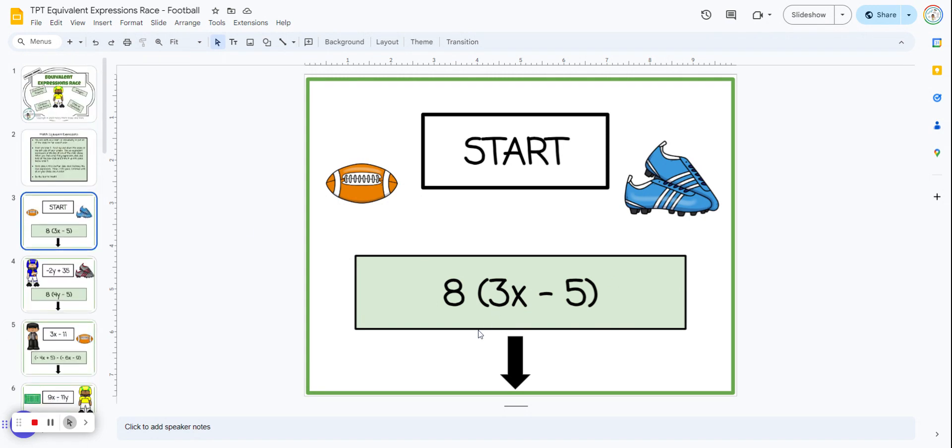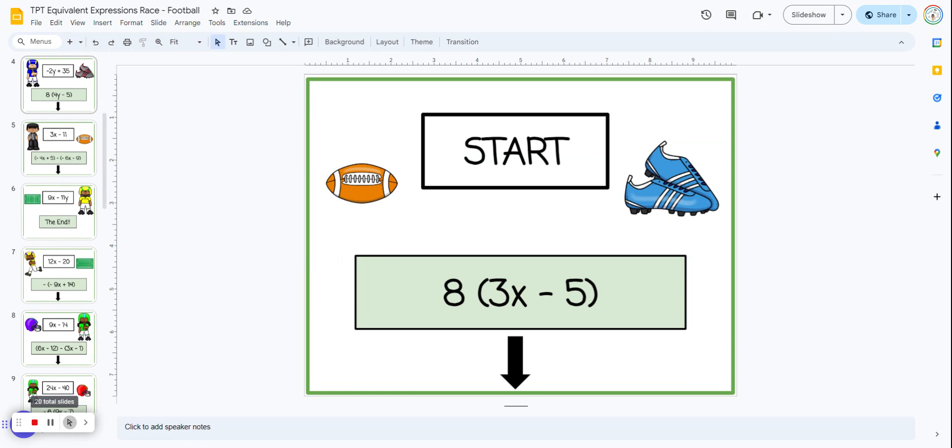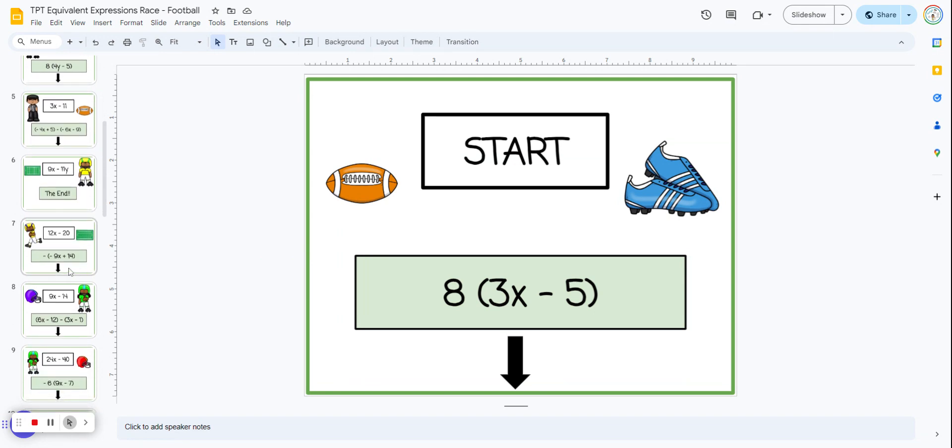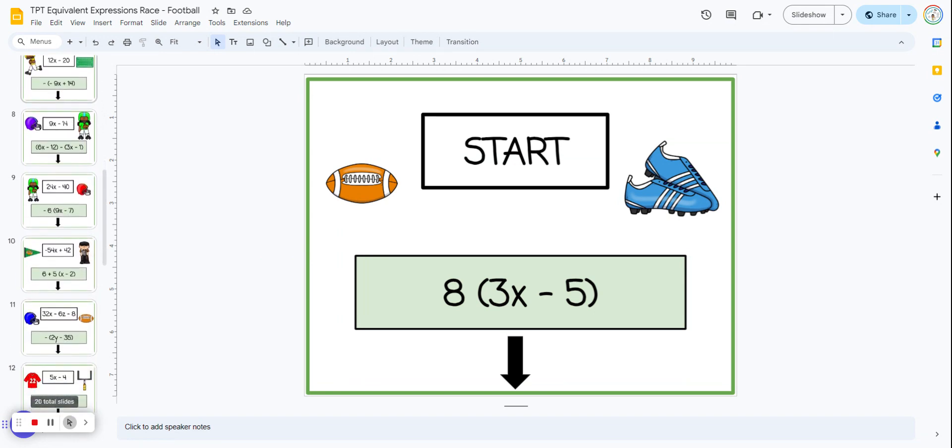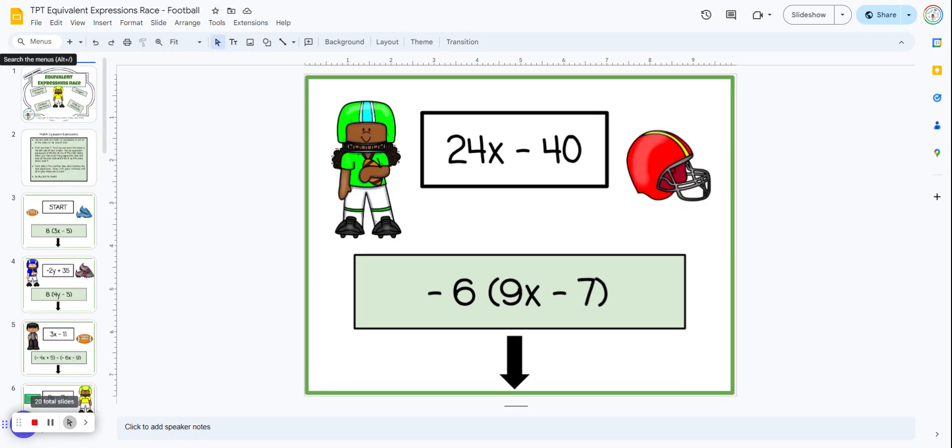If we distribute this eight, we get 24x minus 40. I'm going to scroll up and down until I can find that 24x minus 40. Once you find it, click and hold, and you're going to move it up into place so it's now the second slide so that these two expressions now match.